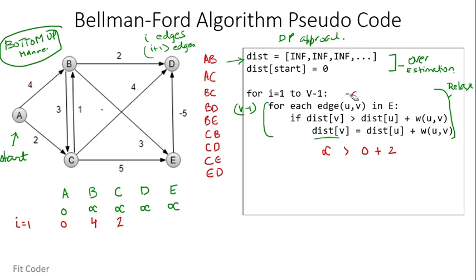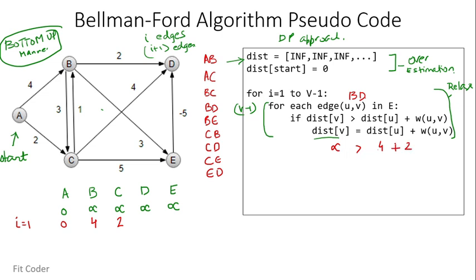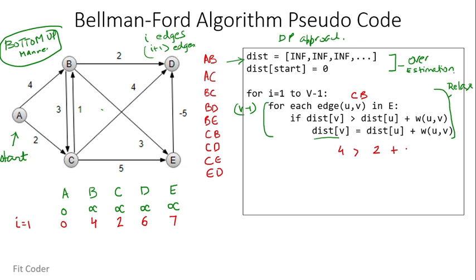For edge BC: distance of C is 2, which is not greater than distance of B (4) plus weight BC (3), so we skip. For edge BD: distance of D is infinity, greater than distance of B (4) plus edge weight (2) = 6, so distance of D becomes 6. For edge BE: distance of E is infinity, greater than distance of B (4) plus edge weight (3), so distance of E becomes 7. For edge CB: distance of B is 4, greater than distance of C (2) plus edge weight (1) = 3, so distance of B becomes 3.